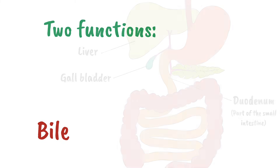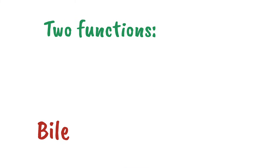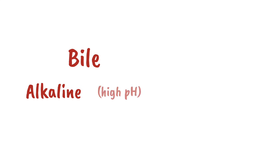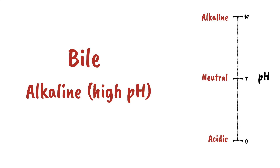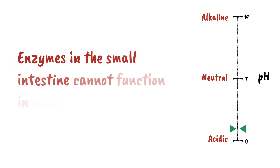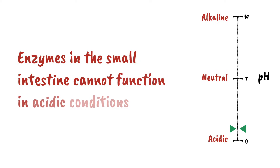Bile has two main functions: neutralization and emulsification. Bile is alkaline, meaning it has a high pH, and so it neutralizes the excess stomach acid, raising its pH. This is important because the enzymes in the small intestine cannot function in acidic conditions.